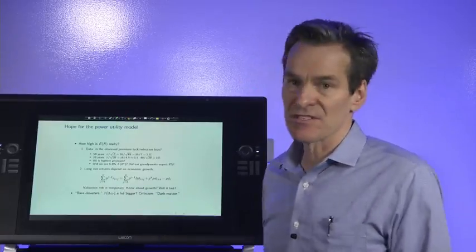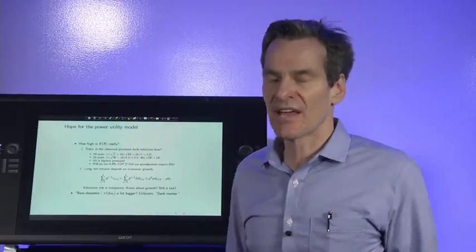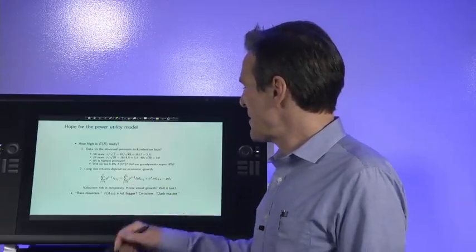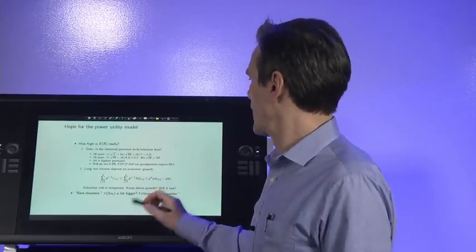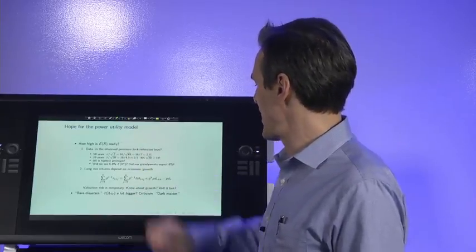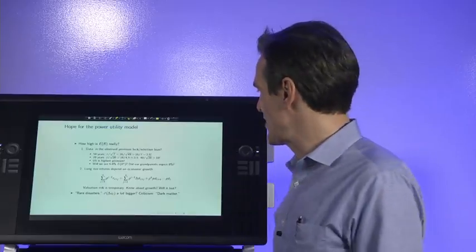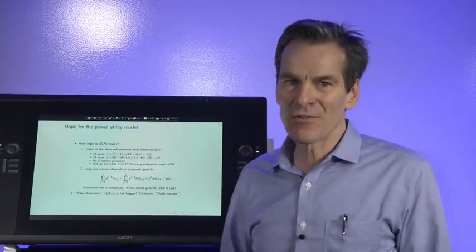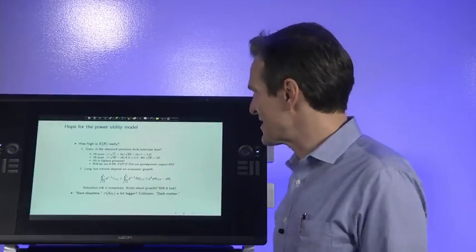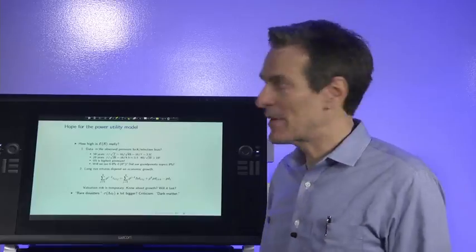Similarly, the rare disasters literature says that the historical statistics we're looking at were misleading. Maybe the true standard deviation of consumption growth is a lot bigger. Rather than thinking that the mean of the equity premium is wrong, maybe really there's more risk out there. Maybe people are worried about earthquakes that only come once every hundred years or so, and that's what makes them afraid of stocks. Of course, one can criticize anything like that. The dark matter criticism says, yeah, people are afraid of something you haven't seen. That can be unscientific if you're not careful about it.